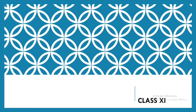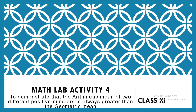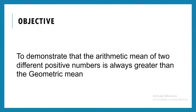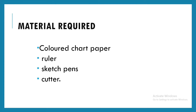Hello everyone. I hope you have watched my previous videos for the Maths Lab activities for class 11. This is the fourth one I am sharing with you. The objective is to demonstrate that the arithmetic mean of two positive numbers is always greater than the geometric mean. If I have two numbers A and B, their arithmetic mean is A plus B upon 2, and their geometric mean is the square root of AB.